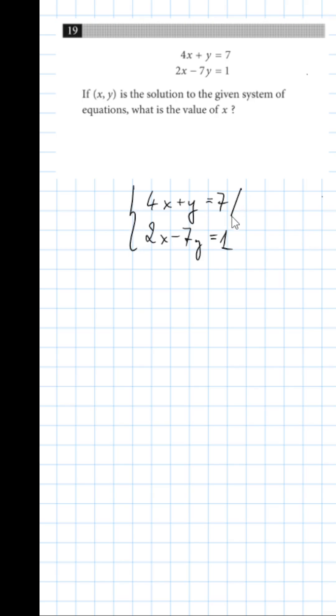So first, let me multiply the first one by 7, so it would be 28x plus 7y, and 49.